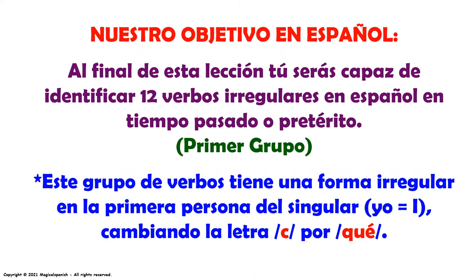Nuestro objetivo en español. Al final de esta lección, tú serás capaz de identificar 12 verbos irregulares en español en tiempo pasado pretérito. Este va a ser el primer grupo. Este grupo de verbos tiene una forma irregular en la primera persona del singular — yo, I — cambiando la letra C por QUE.